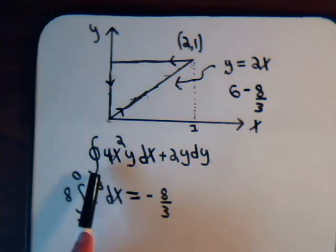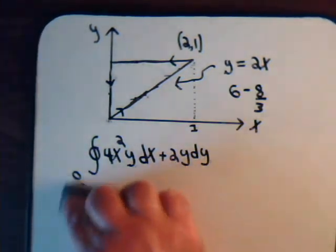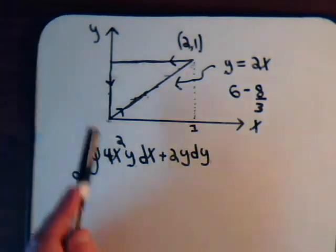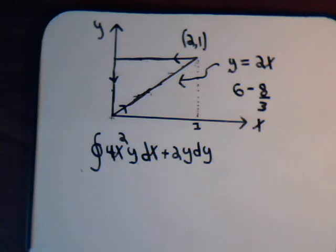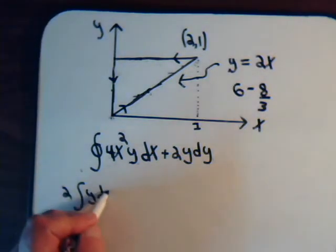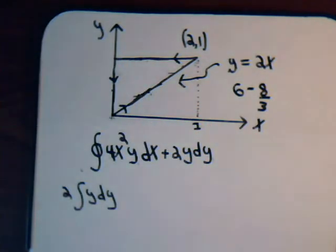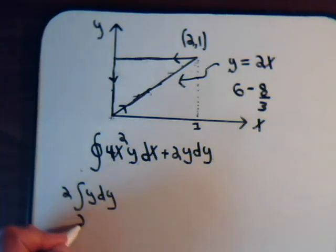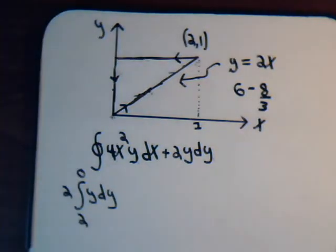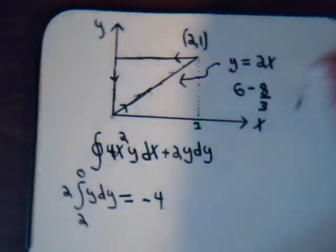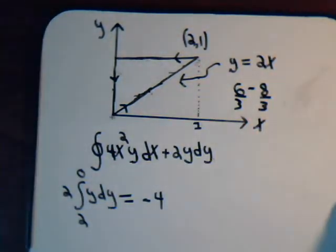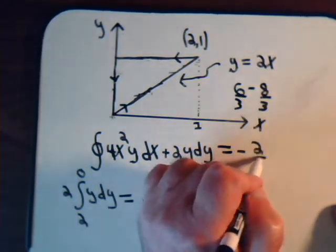Now let's evaluate the integral over the vertical line. On the vertical line, x is 0, and so is 2x, so that part is just 0. We have the integral of 2y dy. y goes from 2 to 0, giving minus 4. So the total is 6 minus 8 thirds minus 4. That's 2 minus 8 thirds, which is 6 thirds minus 8 thirds, giving minus 2 thirds.